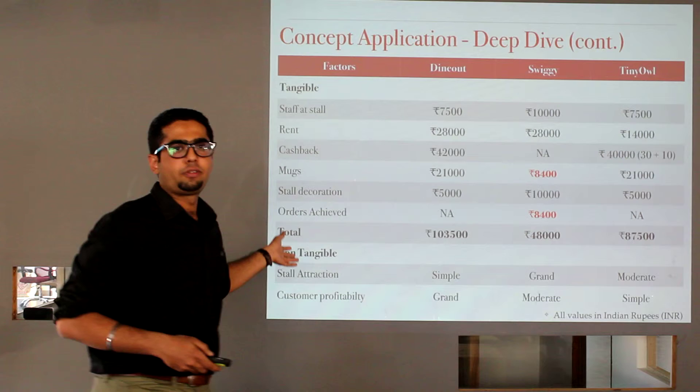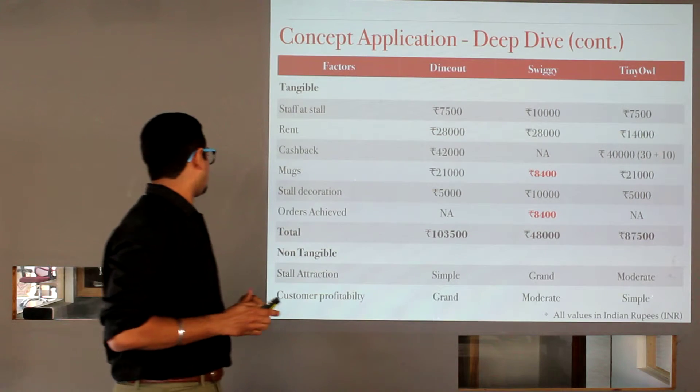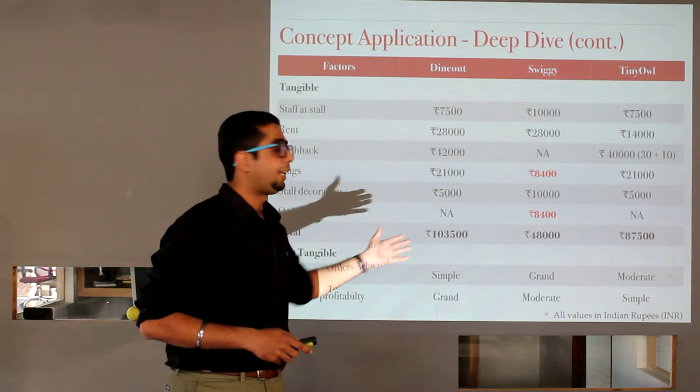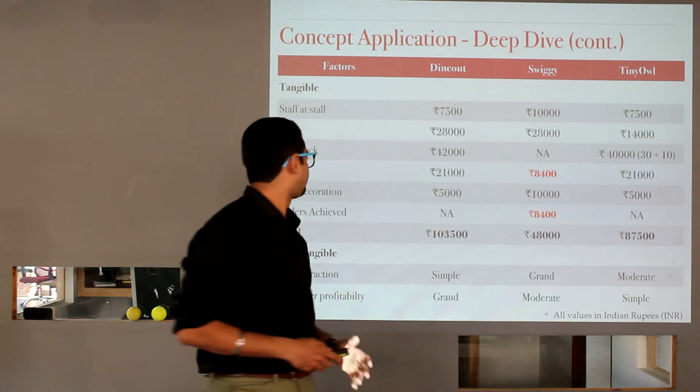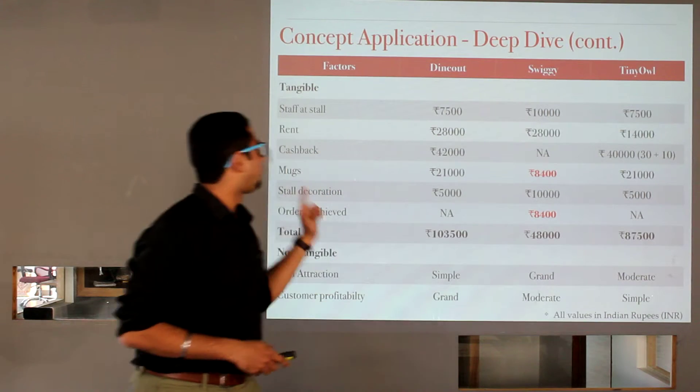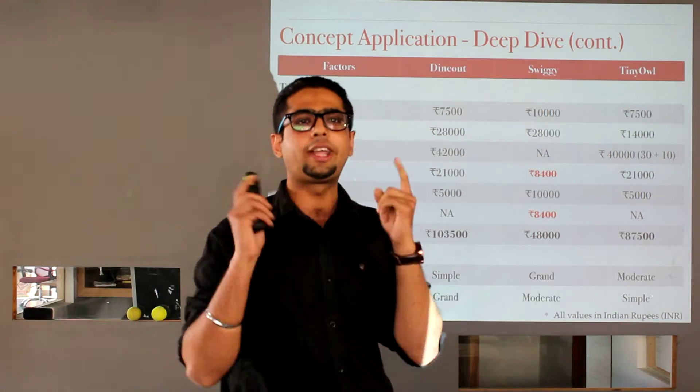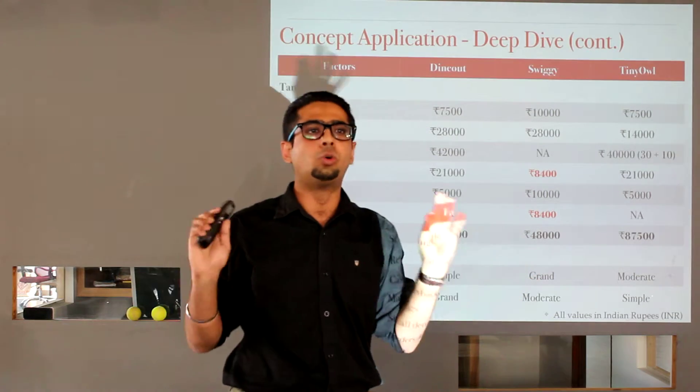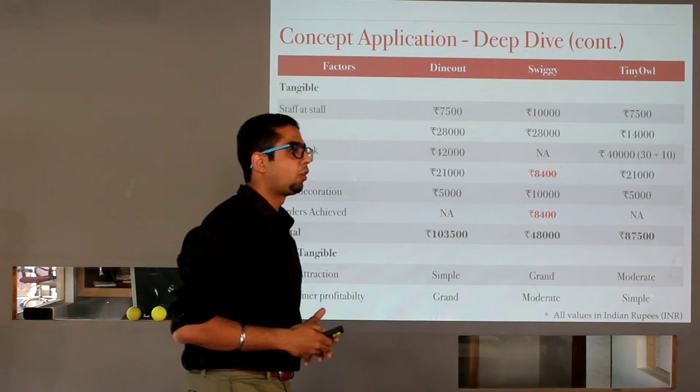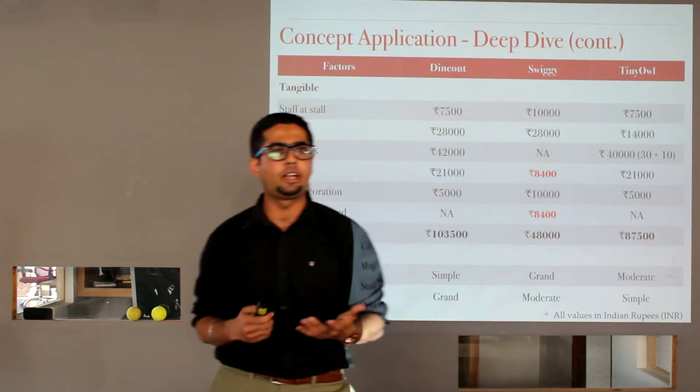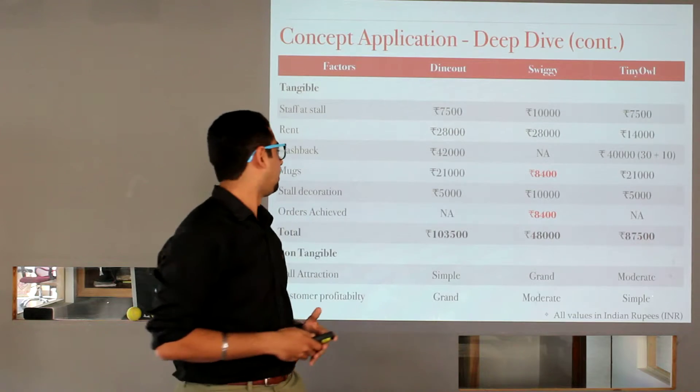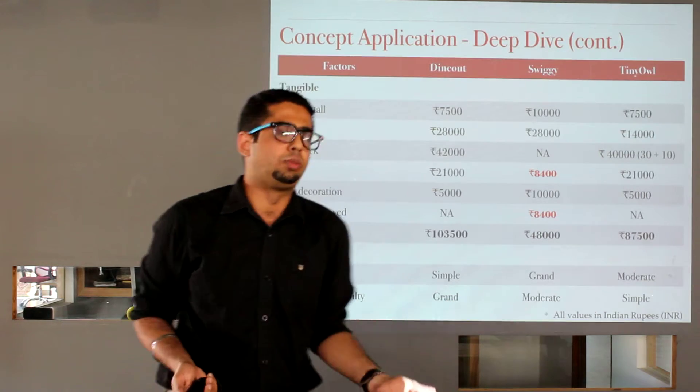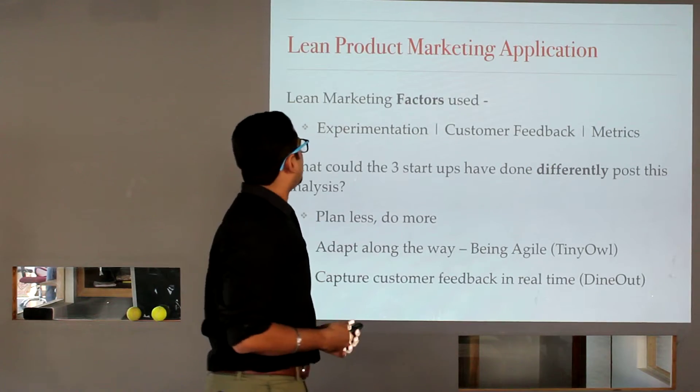We will also go into the non-tangible factors. Some things which cannot be measured on the basis of data. So the first was stall attraction. Now, based on the description that I have given to you, it was simple for DineOut, really grand for Swiggy, and moderate for TinyOwl. Customer profitability. Grand for DineOut. Why grand? Because the moment I reached a stall, I get a 100 rupees cashback and I get a mug. Without doing anything. And after that, I can completely forget about who DineOut is. Moderate for Swiggy because it involved some sort of process to be carried out. It involved an investment from my side, an order of 50 rupees. And TinyOwl was pretty simple. I could have gone and played the game or I could have not. I could have simply received that coupon.